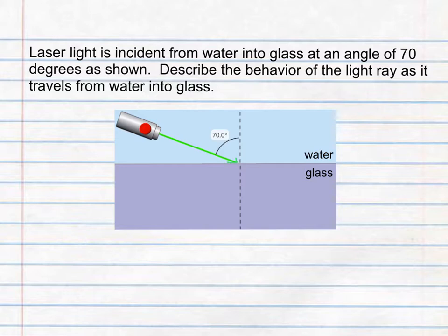Here we notice that the laser light is traveling from one medium, water, into a different medium, glass. We know by definition that when a light ray travels from one medium into another, it's going to refract and change direction, meaning its velocity, speed, and direction will both change.